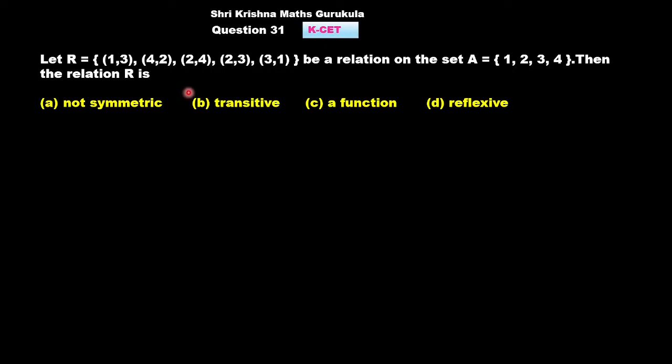So we should have (1,1), (2,2), (3,3), (4,4). All these four ordered pairs for the relation to be reflexive which we do not have. So it is not a reflexive relation.